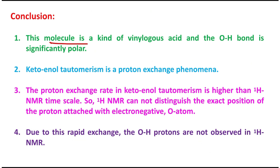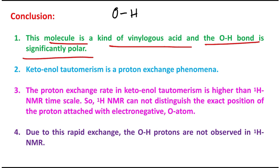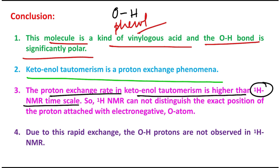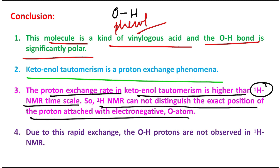In conclusion, the molecule is a kind of vinylogous acid and the O–H bond is significantly polar — first due to the electronegativity difference, and second because it is a phenol derivative or aromatic alcohol, which is more acidic than aliphatic alcohols. The keto-enol tautomerism is a proton exchange phenomenon. Most importantly, the proton exchange rate in keto-enol tautomerism is significantly higher compared to the 1H NMR timescale at room temperature, so NMR cannot distinguish the exact position of the proton on oxygen, and the OH protons are not observed. We get two signals, both doublets.